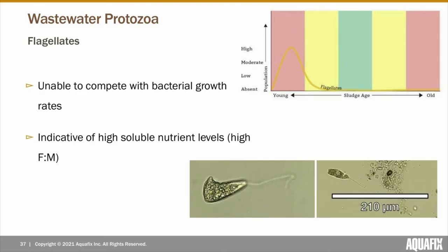Flagellates have one or more long hair-like tails called flagella, used for movement and feeding on dispersed bacteria. Flagellates are unable to compete with bacterial growth, so they're primarily found in systems with a high F to M and younger sludge age, prior to strong flock formation occurring. Flagellates can also be abundant in systems that have recently experienced a toxic upset, because toxic upsets are usually followed by the rapid growth of free bacteria — meaning an abundance of food for flagellates.